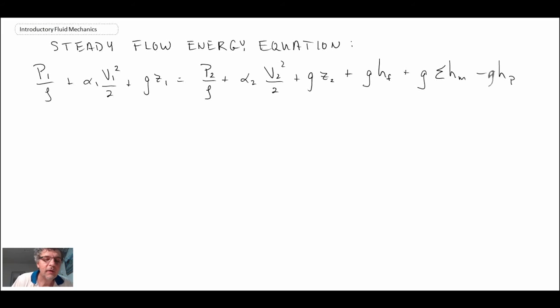Okay. So we have our kinetic energy coefficient alpha, that is in there. This is our major losses, and that is due to turbulent shear within the pipe. This is all of our minor losses.